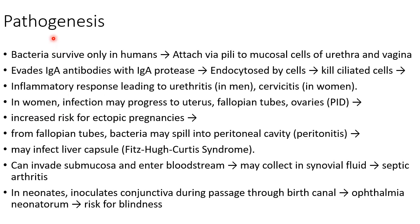Now let us discuss the pathogenesis of Neisseria gonorrhea. These bacteria survive only in humans. They attach via pili to mucosal surfaces of the urethra and vagina. Neisseria gonorrhea evades IgA antibodies with IgA protease and it is endocytosed by cells, which kills the ciliated cells.